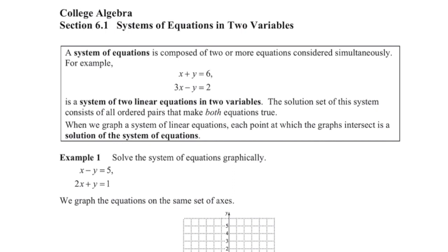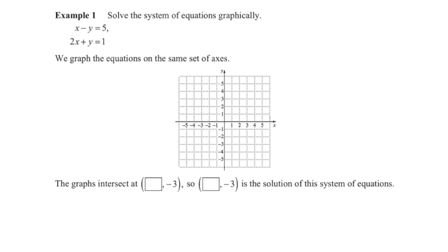This is known as a system of two linear equations, since we have two equations in two variables, x and y. The solution set consists of all ordered pairs that make both equations true. When we graph a system of linear equations, each point where the graphs intersect is a solution. It could intersect in one location giving one solution, lines could be parallel giving no solution, or the lines could be identical giving infinitely many solutions.